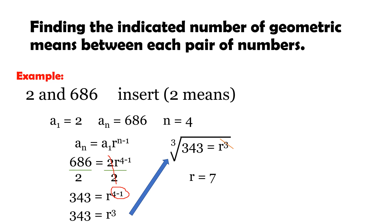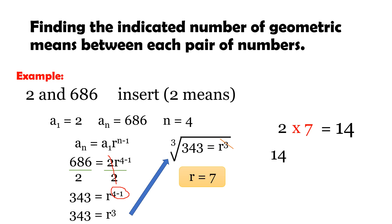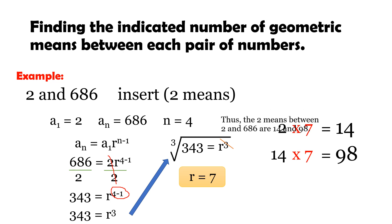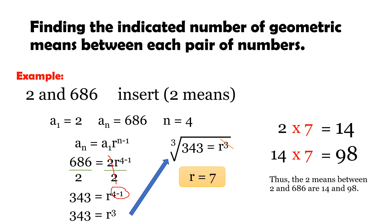For the first mean: 2 × r = 2 × 7 = 14. For the second mean: 14 × 7 = 98. Therefore, the sequence is 2, 14, 98, and 686, where 14 and 98 are the two geometric means between 2 and 686.